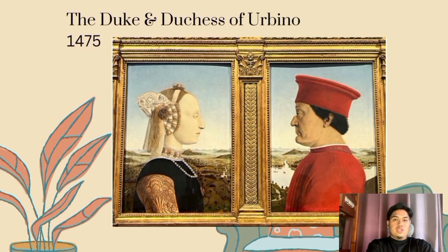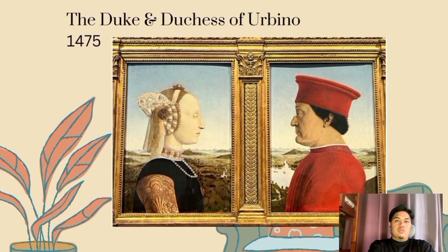Piero della Francesca was a mathematician as well as a painter. It is not surprising, therefore, that his paintings are characterized by their use of geometric forms and perspective, as well as serene humanism.